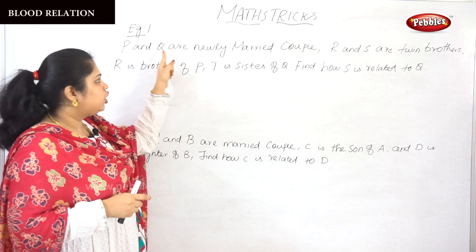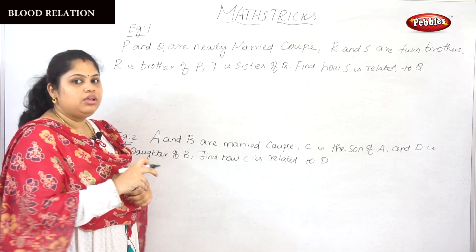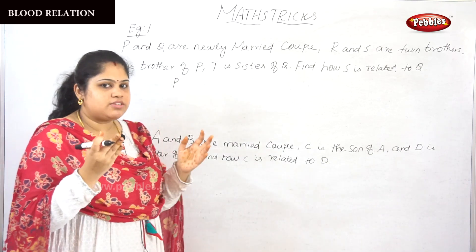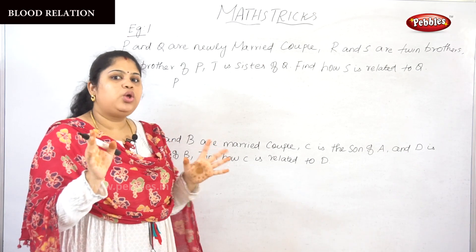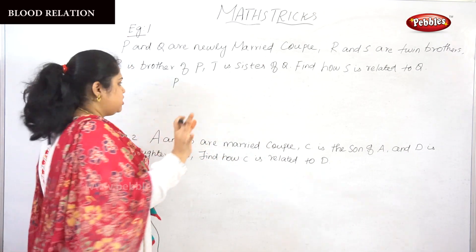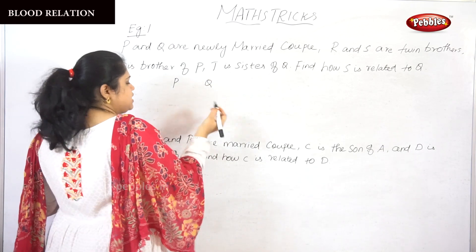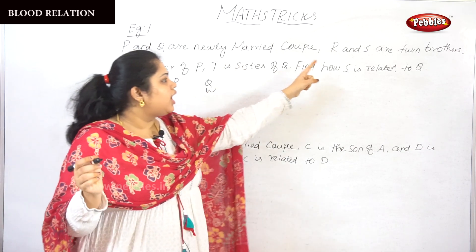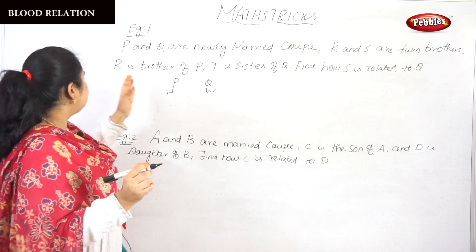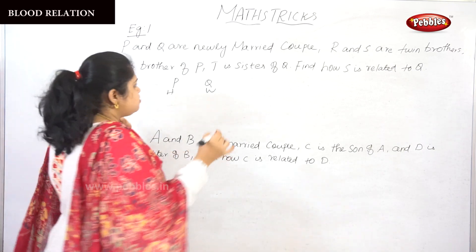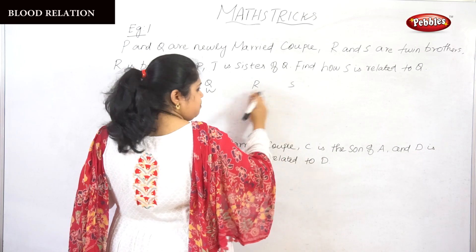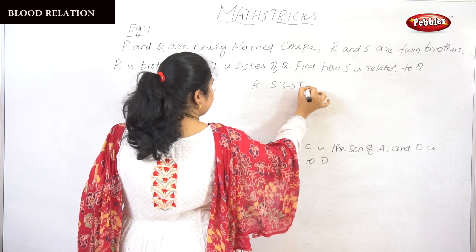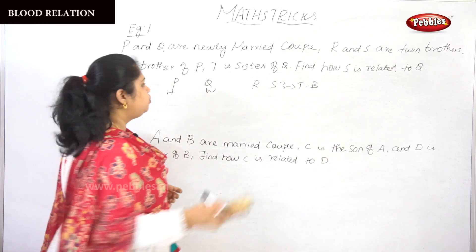P and Q are a newly married couple. So P and Q are couples — husband and wife. We don't know who is male and who is female; anybody can be husband and anybody can be wife. R and S are twins brothers.